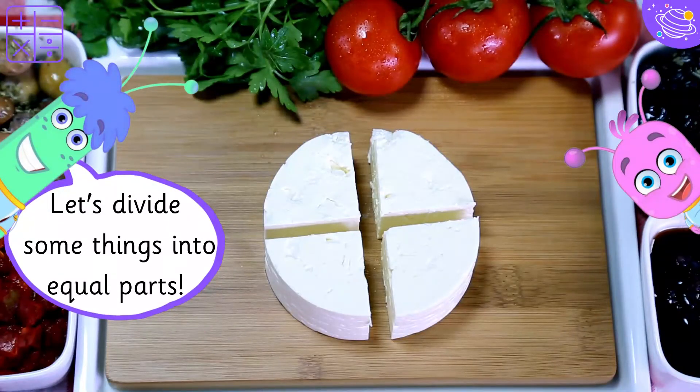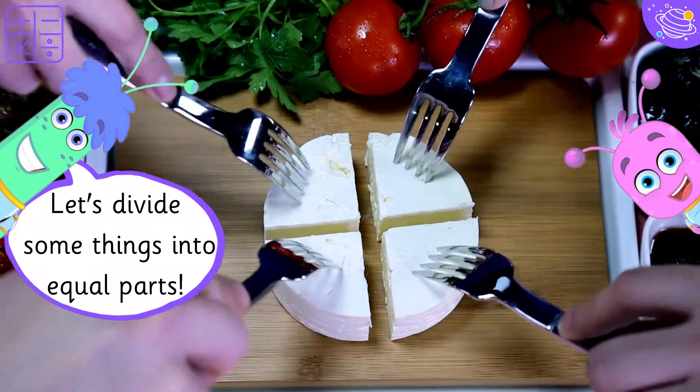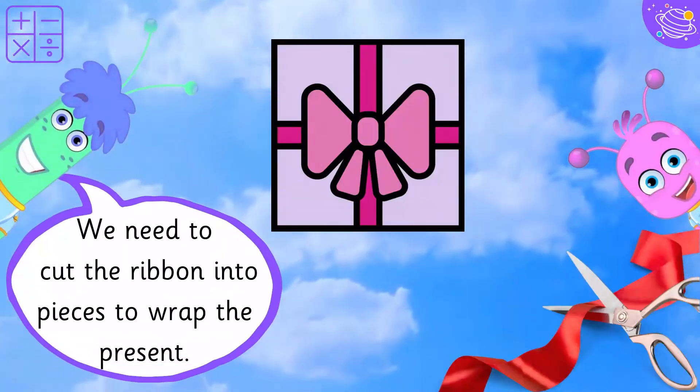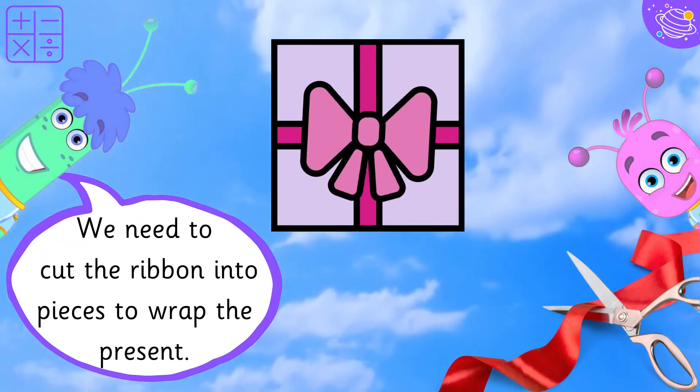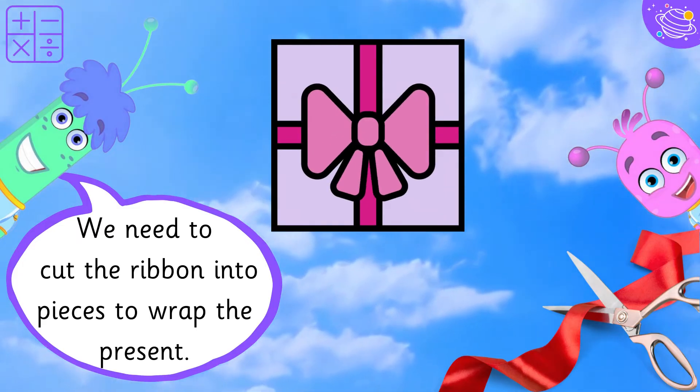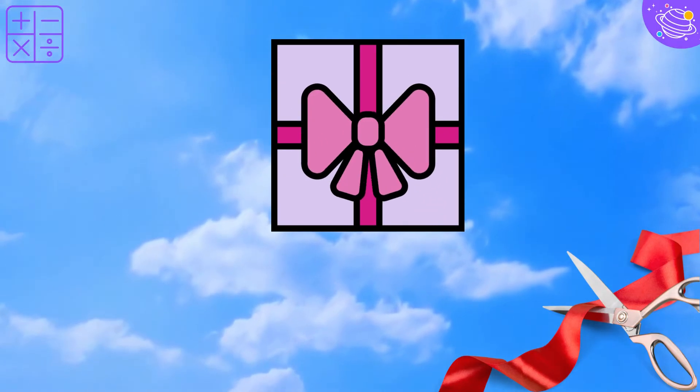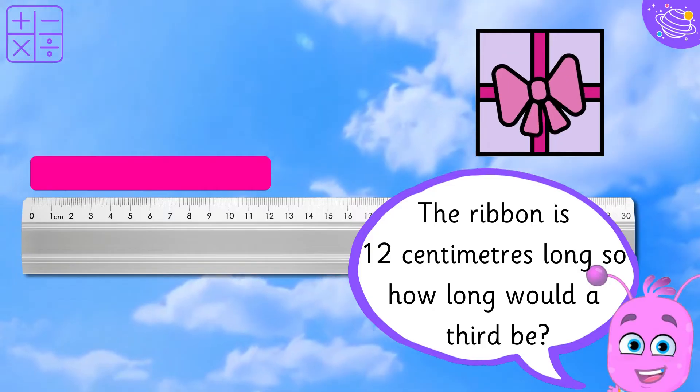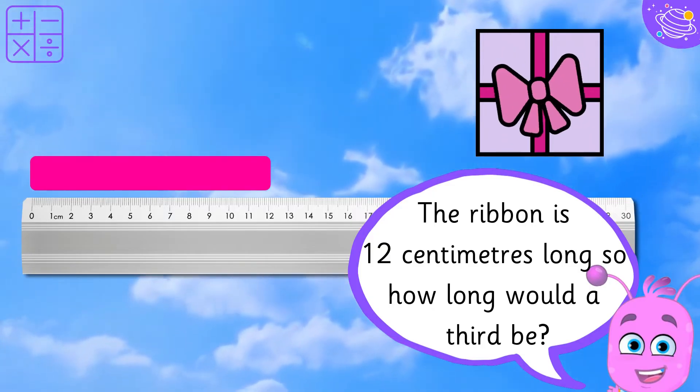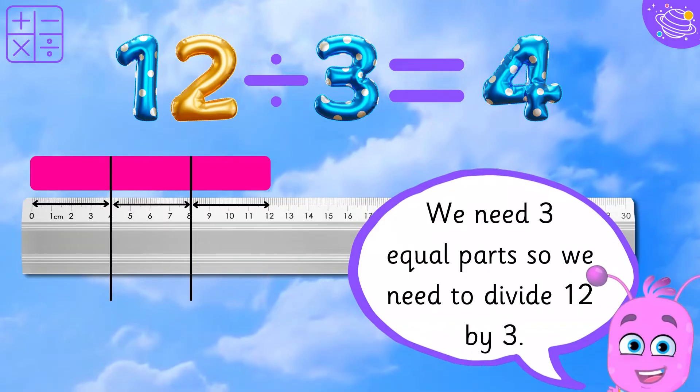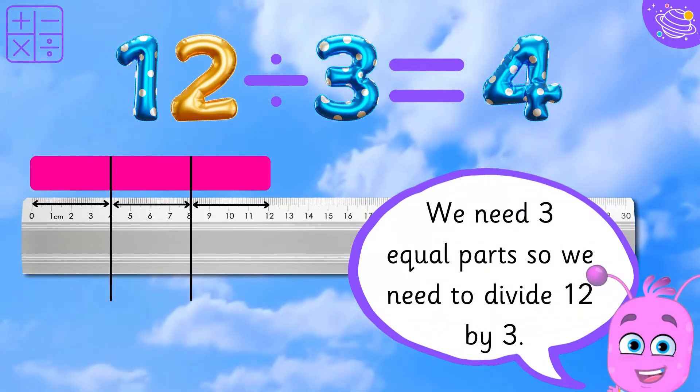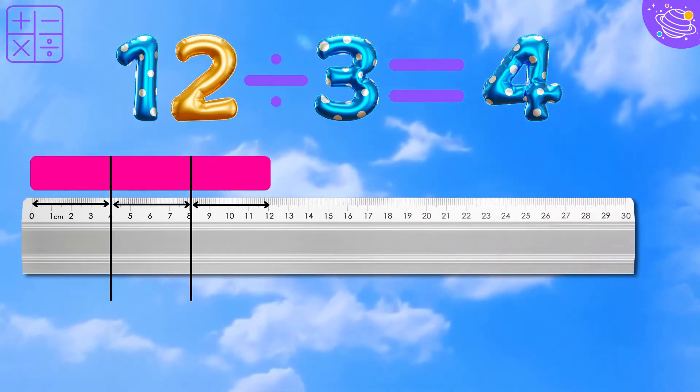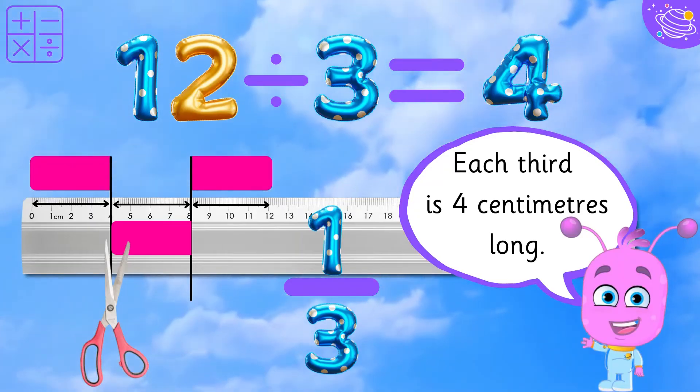Let's divide some things into equal parts. We need to cut the ribbon into pieces to wrap the present. The ribbon is 12 centimeters long. So how long would a third be? We need three equal parts, so we need to divide twelve by three. Each third is four centimeters long.